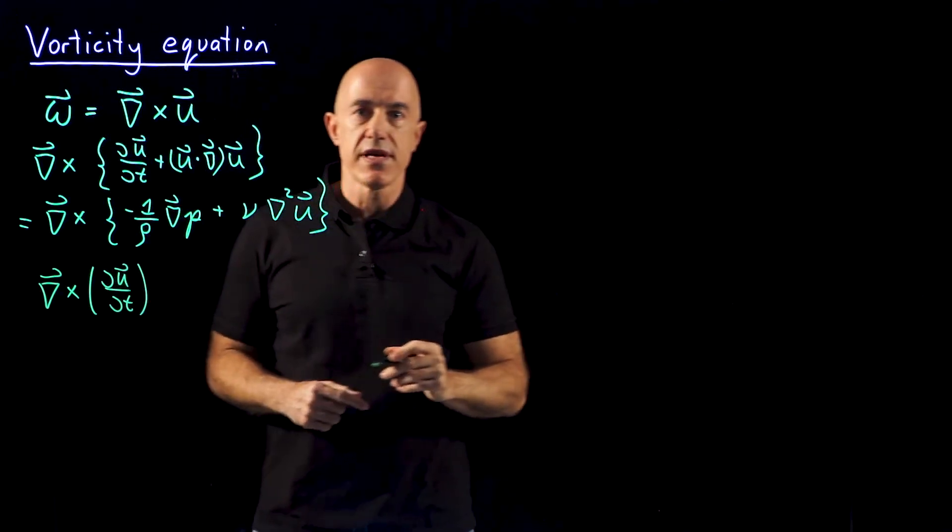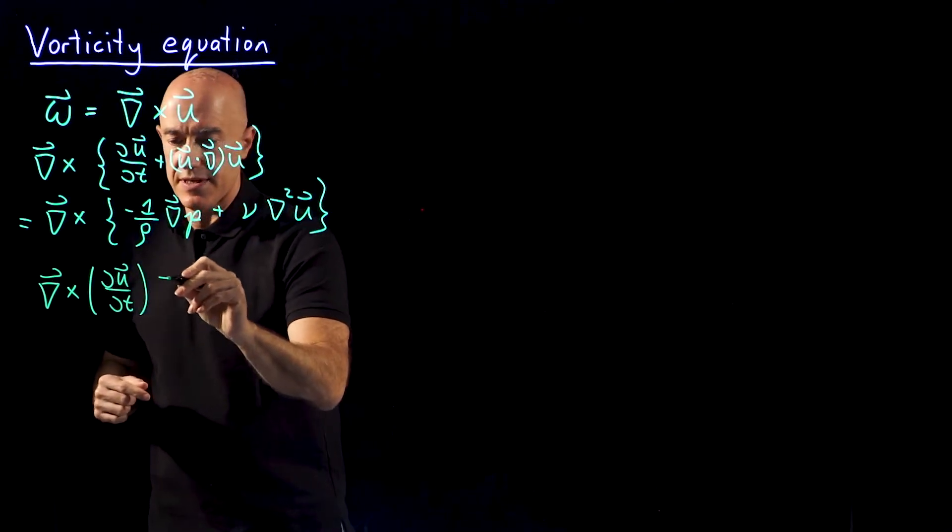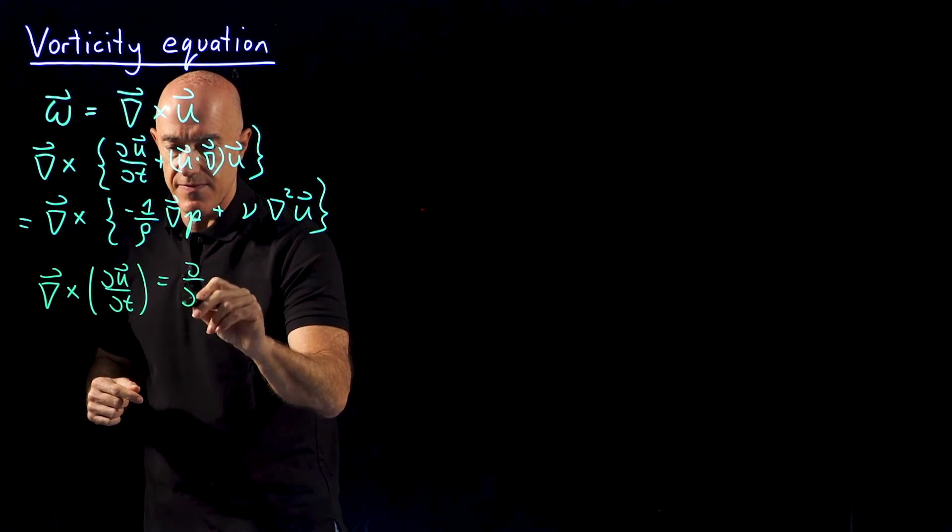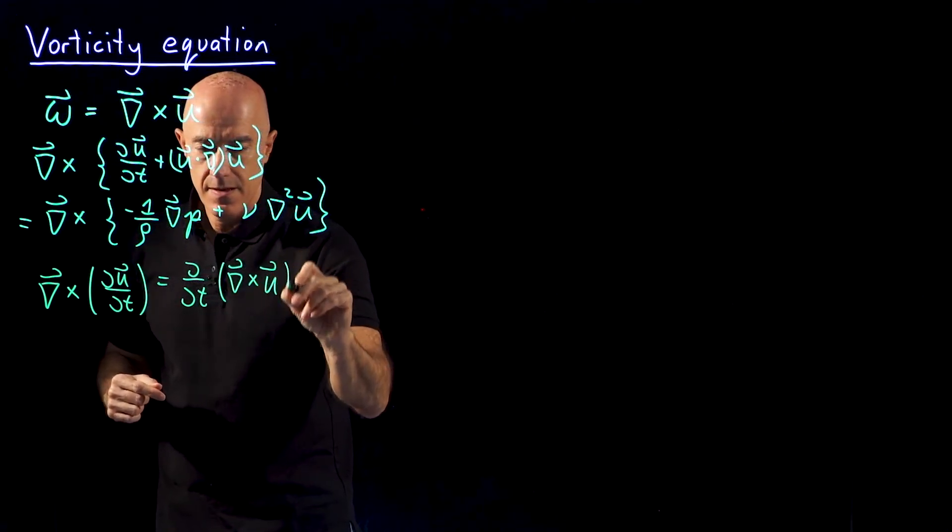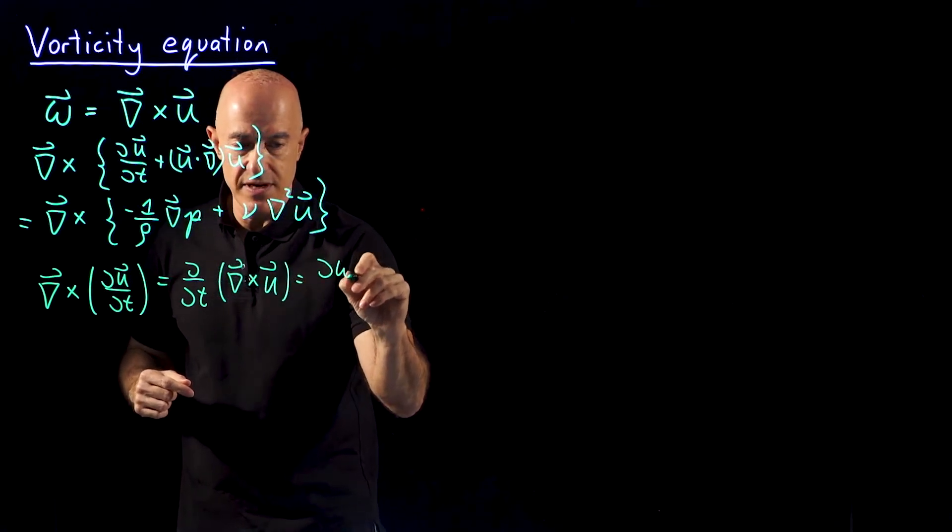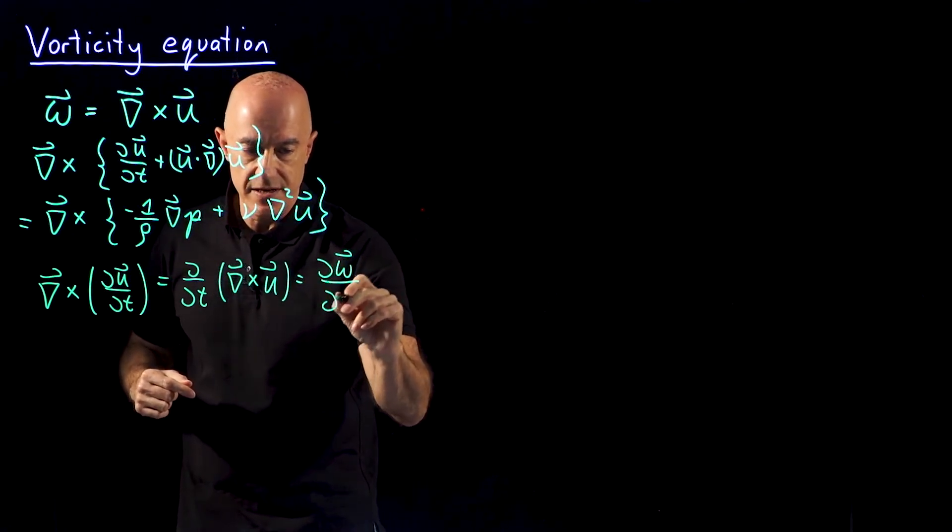These two derivatives commute. So this is equal to the time derivative of the curl of u, which is just the time derivative of the vorticity field.